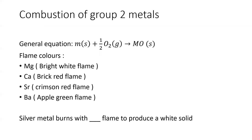Combustion of Group 2 metals: the general equation is that a metal will burn in half a mole of oxygen to form metal oxide. M refers to the metal, and that's the general formula required. Remember, the product is a white solid because it's not a transition element.